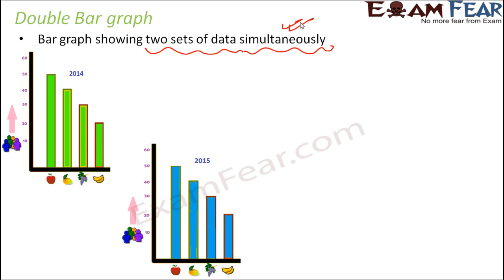It was done in 2014 and also in 2015. The students were given four options — mango, apple, grapes, and banana — and they had to choose their most liked fruit. Using that, we came up with a bar graph for 2014, and similarly we did the same survey again in 2015 and came up with another bar graph. So you have one bar graph for 2014 and one separate bar graph for 2015.